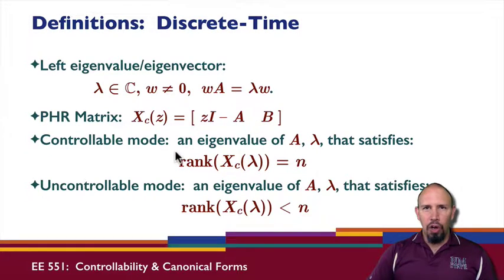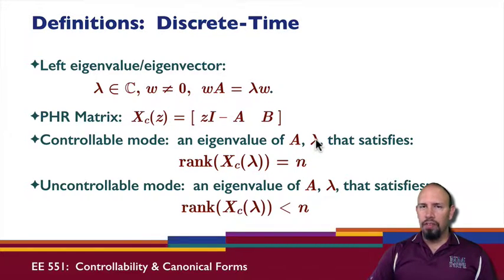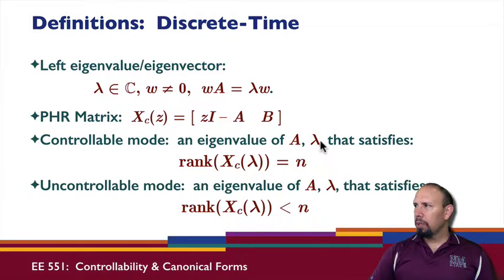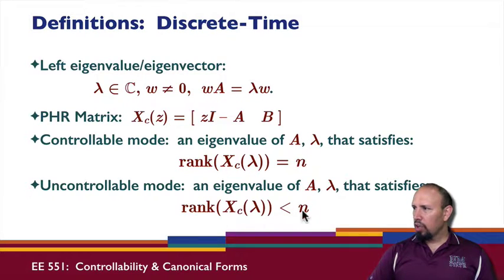We can talk about something called an uncontrollable mode. A controllable mode is an eigenvalue lambda such that the rank of the matrix X_C(λ) is equal to N. So if lambda is any eigenvalue or mode of the system and we plug it into X_C and it has rank N, then that is a controllable mode. An uncontrollable mode is when the rank of X_C(λ) is less than N, where A is an N by N matrix.